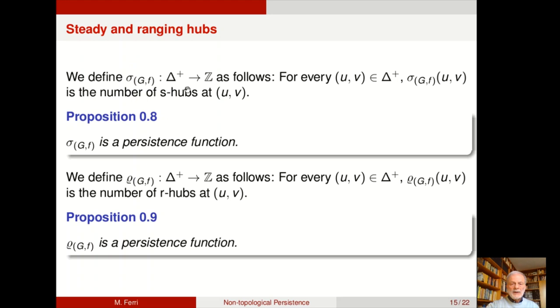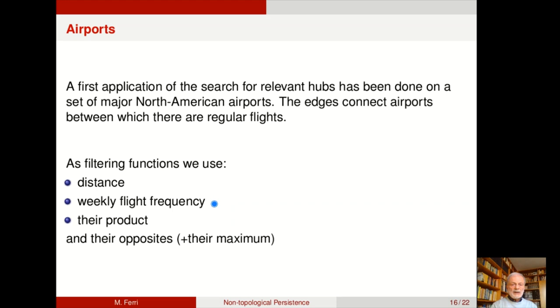And so we can define these two functions sigma gf, which counts the number of S-hubs at uv, and which is a persistence function too.